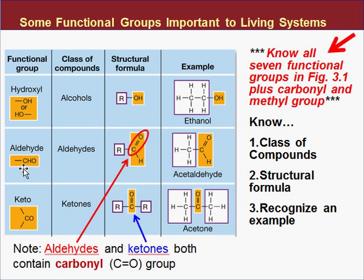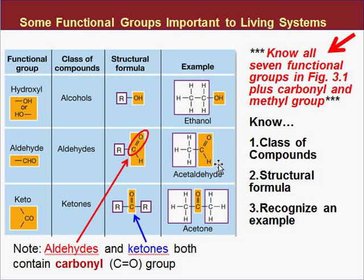The next group is aldehyde — it's a carbon, hydrogen, and oxygen, where the carbon is double-bonded to the oxygen and has one covalent bond to the hydrogen. This creates an aldehyde; the example is acetaldehyde, and the name tells you we're talking about an aldehyde. Remember, each carbon can participate in four covalent bonds — you count those solid lines.